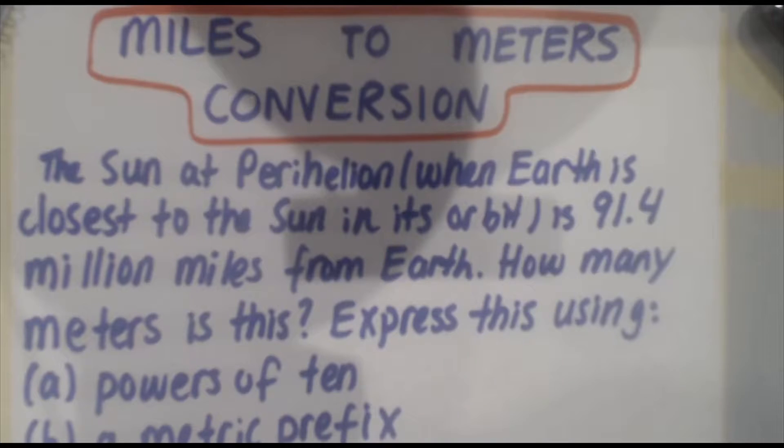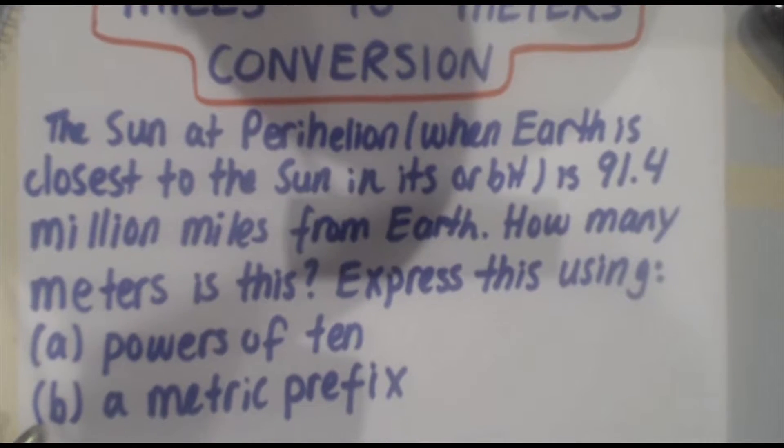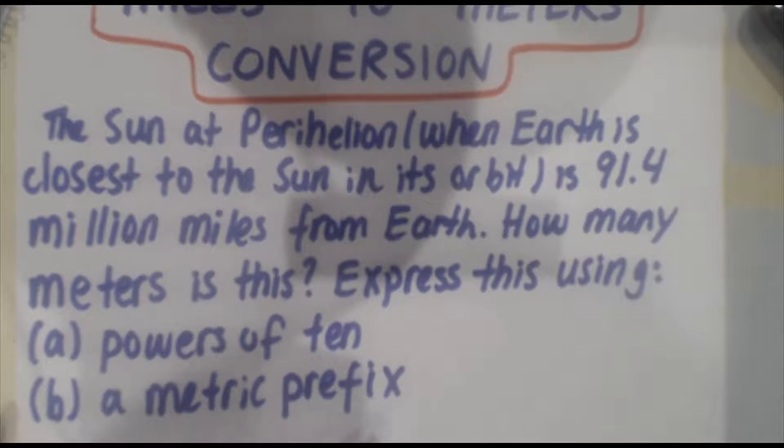Hi everyone. Today, Physics and the Flesh is going to do a miles to meters conversion. So this is the problem we need to solve. The sun at perihelion, when Earth is closest to the sun in its orbit, is 91.4 million miles from Earth. How many meters is this? We need to express this using powers of 10 and a metric prefix.